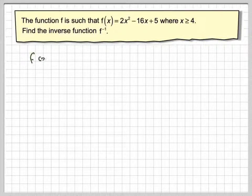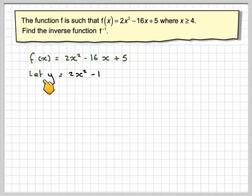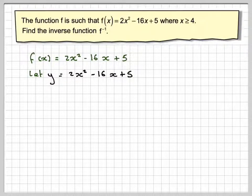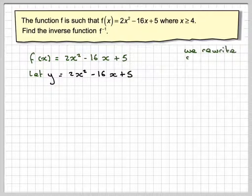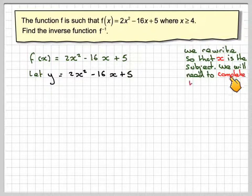Let's write down the function to begin with. So f(x) = 2x² - 16x + 5. First, you let y be equal to 2x² - 16x + 5. Then in order to find the inverse function, we need to make x the subject, and in order to do that, we will have to complete the square.